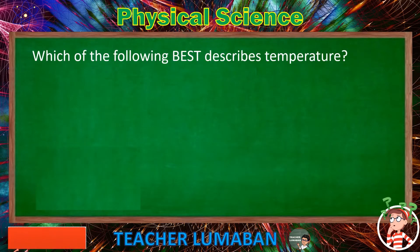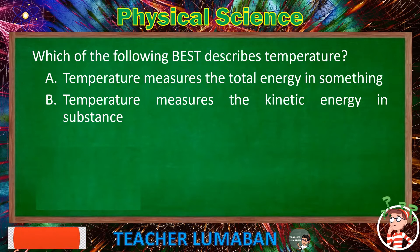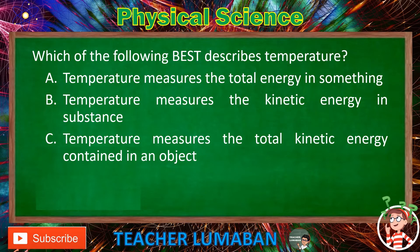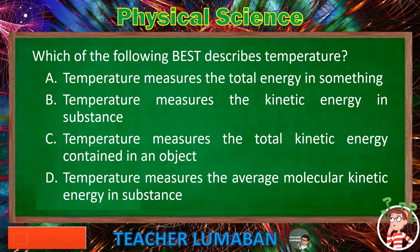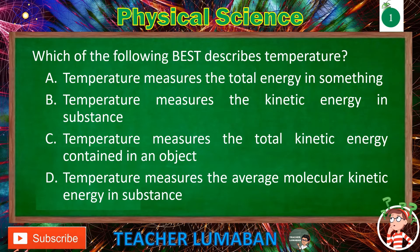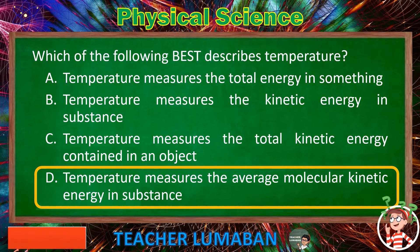Which of the following best describes temperature? Letter A: temperature measures the total energy in something. Letter B: temperature measures the kinetic energy in a substance. Letter C: temperature measures the total kinetic energy contained in an object. Letter D: temperature measures the average molecular kinetic energy in a substance. The correct answer is Letter D. Temperature measures the average molecular kinetic energy in a substance best describes temperature.